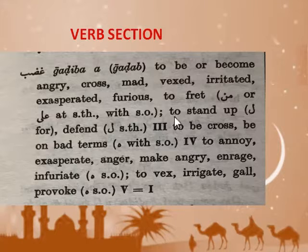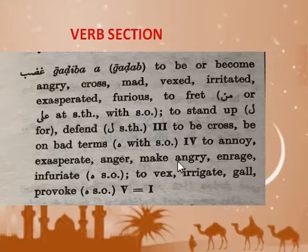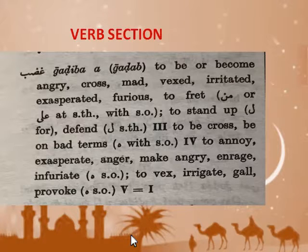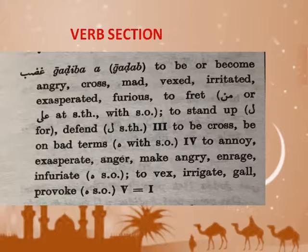The first thing you'll notice are all these Roman numerals, which refer to the measures. This is why we always do the measures using Roman numerals. You can't even use this dictionary if you don't know the measures. Hans is assuming this is not a dictionary for tourists — he assumes a fairly robust knowledge of Arabic in order to use it. You'll even see people buying this dictionary who don't even know the Arabic alphabet.